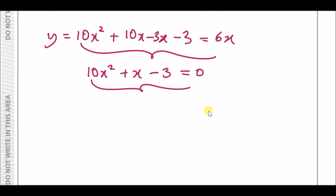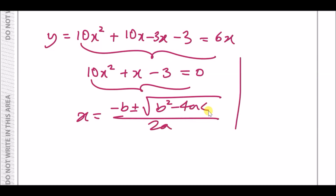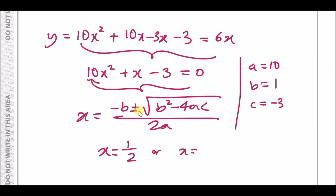Use the quadratic formula: x equals minus b plus or minus the square root of b squared minus 4ac, all over 2a. Here a equals 10, b equals 1, and c equals minus 3. Substituting in and using the plus gives x equals one half. Using the minus gives x equals minus three over five.